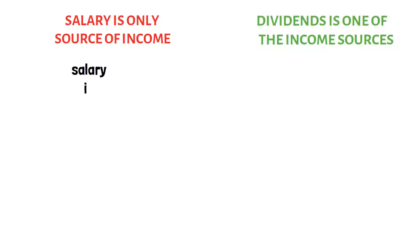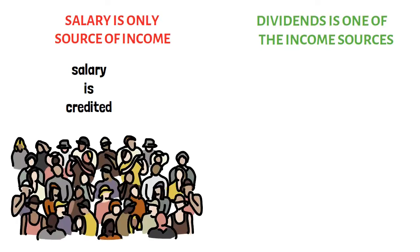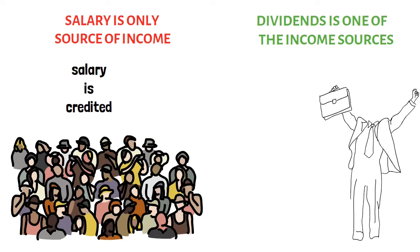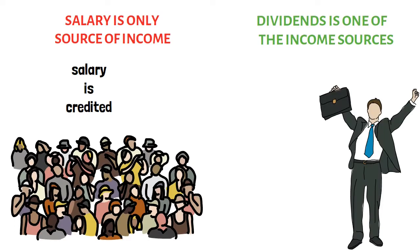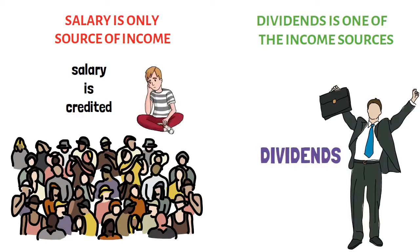There are two types of people in the world. The first type is happy when their salary is credited. The second type of people are happy because their income comes from dividends. Poor people and rich people both have money, but the source differs.